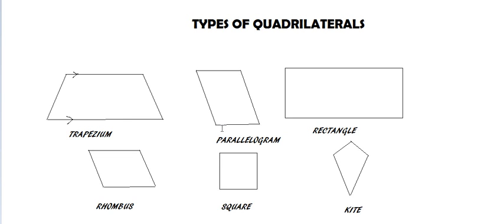Next is a parallelogram. In a parallelogram, both pairs of opposite sides are parallel — this side is parallel to this side, and this side is parallel to this side. Also, both pairs of opposite sides are equal in length: these 2 sides are equal, and these 2 sides are also equal.